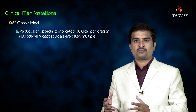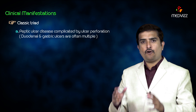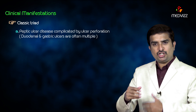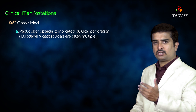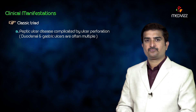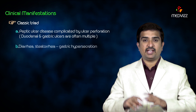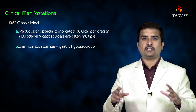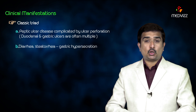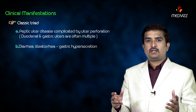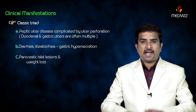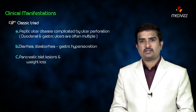The clinical manifestations of Zollinger-Ellison syndrome include an important clinical triad. First is peptic ulcer disease, usually in the duodenum, often complicated by ulcer perforation — duodenal and gastric ulcers are often multiple. Second is diarrhea, seen in greater than 50% of patients, along with steatorrhea and gastric hypersecretion.